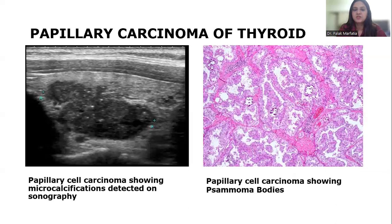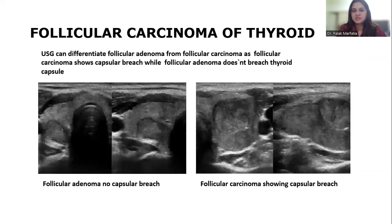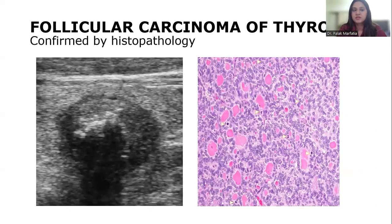Papillary carcinoma of thyroid: papillary cell carcinoma showing microcalcifications detected on USG, and on HPE it shows psammoma bodies. Follicular carcinoma of thyroid: USG can differentiate follicular adenoma from follicular carcinoma, as follicular carcinoma shows capsular breach while follicular adenoma does not show breach of the thyroid capsule, as shown in the pictures. Follicular carcinoma of thyroid confirmed by histopathology.